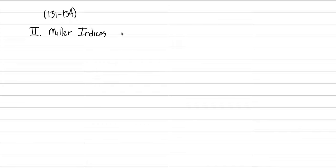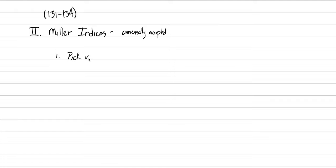Miller indices are the most universally accepted form of notation to describe face intercepts. The steps to calculate Miller indices: the first step is we have to pick the unit face. This is going to be the frame of reference for all the other things.